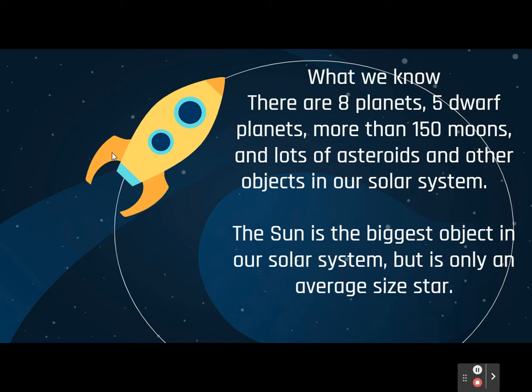Things we already know: there are eight planets. Yes, there used to be nine — now there are eight. We also have five dwarf planets and more than 150 moons, plus lots of asteroids and other objects that are all part of our solar system. Hopefully you know that the sun is the biggest object in our solar system, but did you know the sun is not really a big star? It's kind of an average-sized — not big, not little, just a nice medium-sized star.